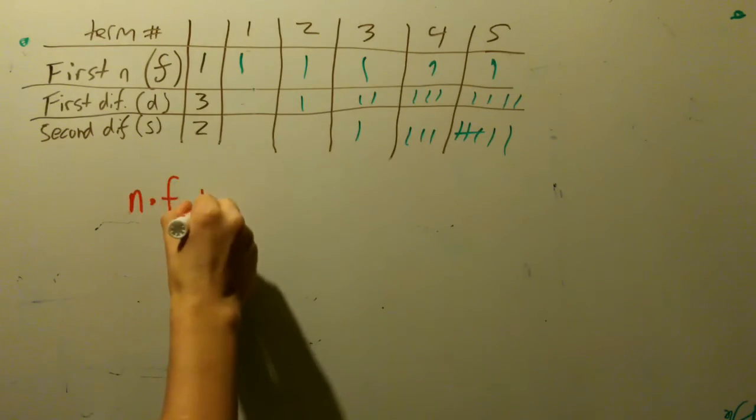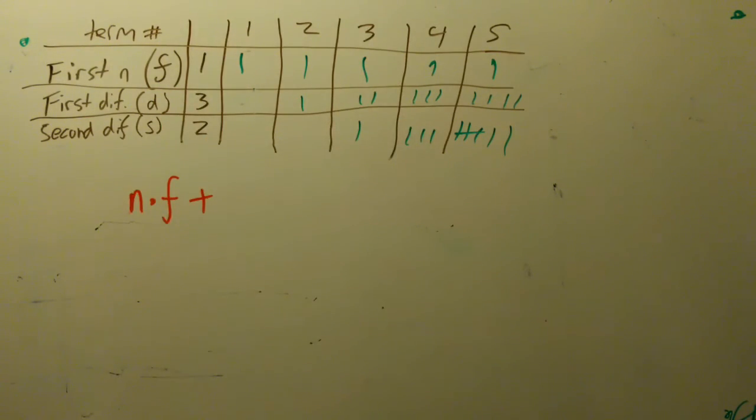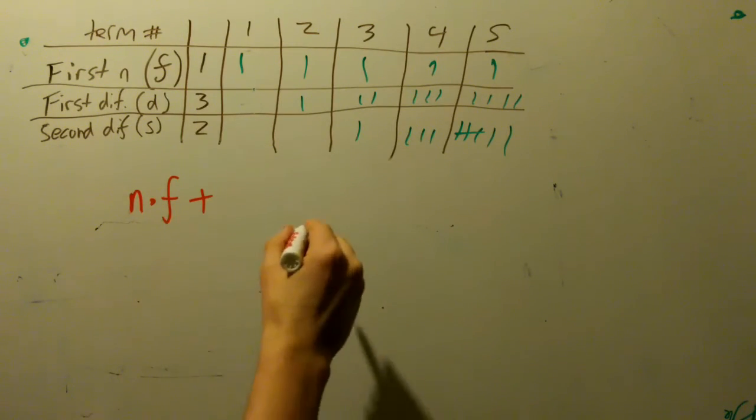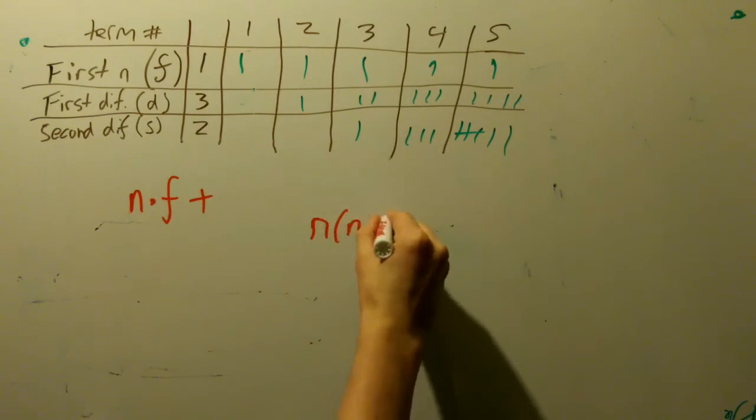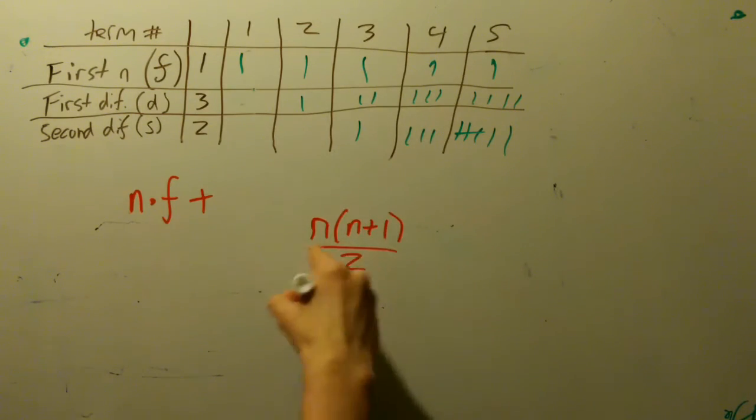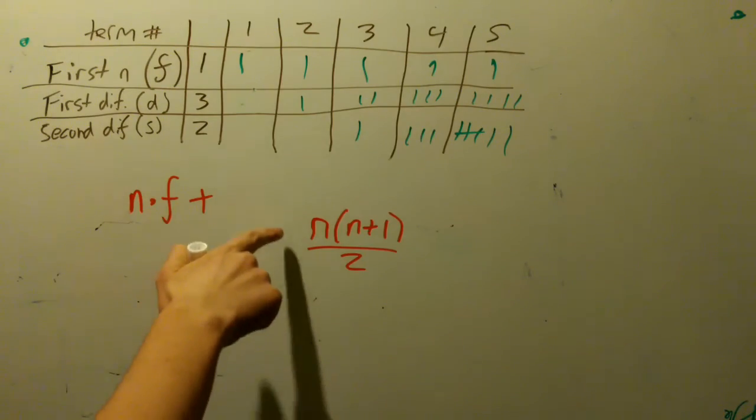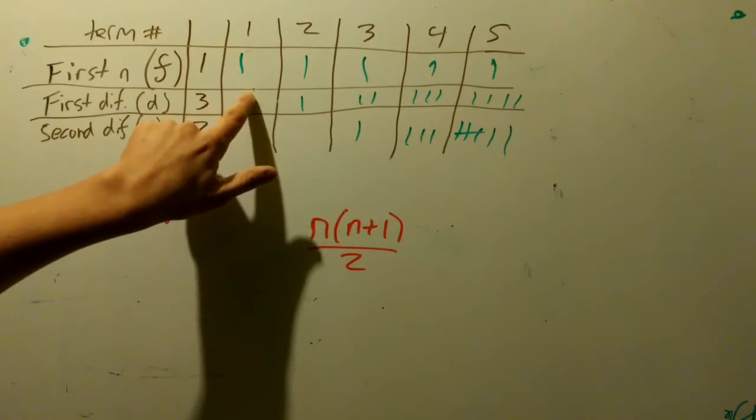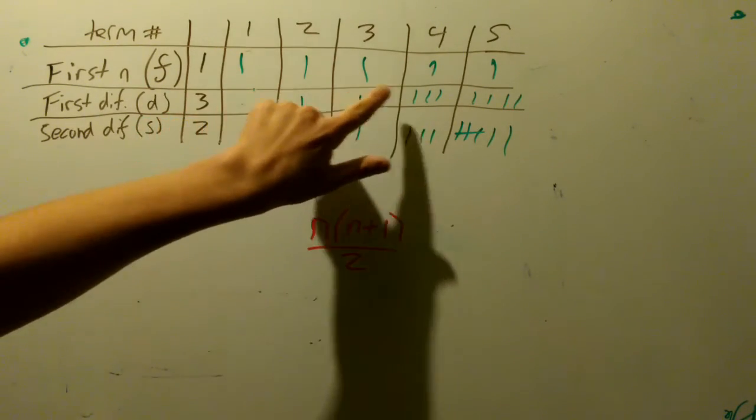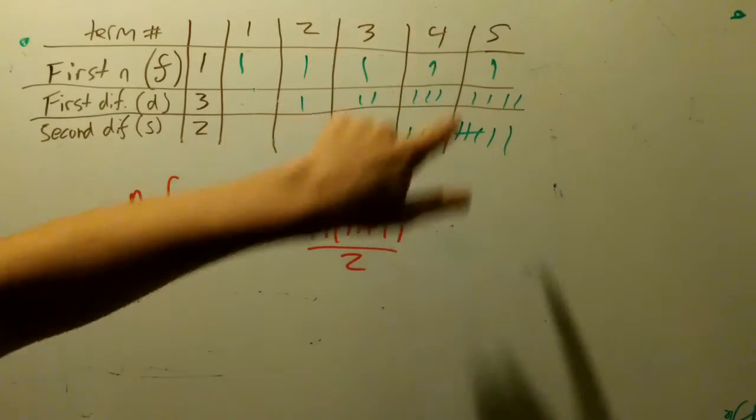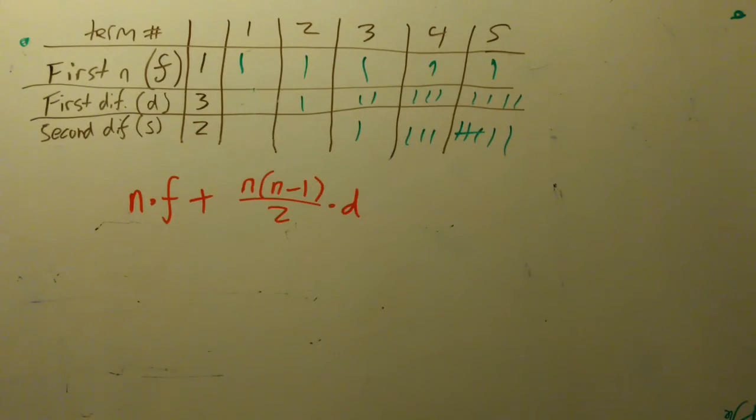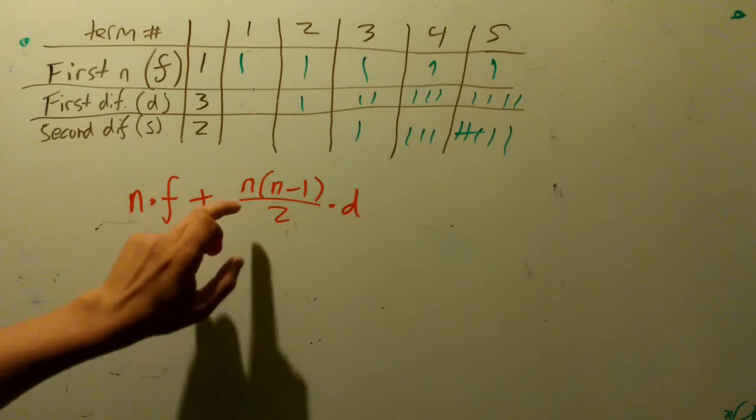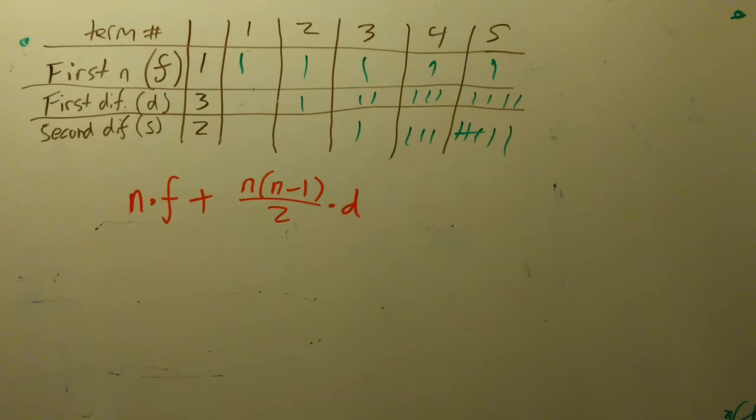And if you know anything about the sums of linear equations, you can find it by n times n plus 1 over 2. This is the sum of an equation. The problem is we have to plug in n minus 1 in this equation because we're starting to the right one. So at 2, we're really starting at n minus 1 is 1. Because this is the first, second, third, and fourth, even though they appear in different terms in this particular series.